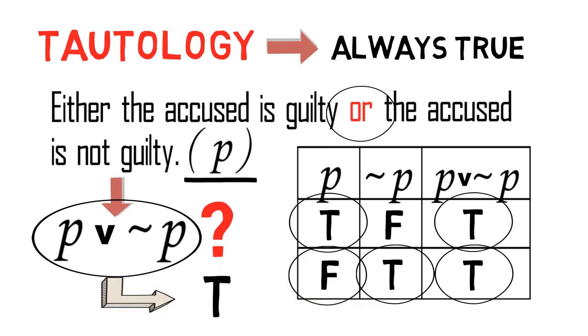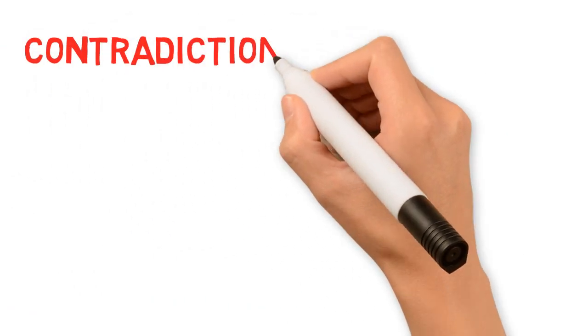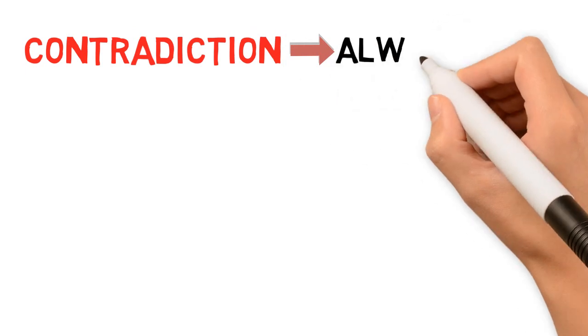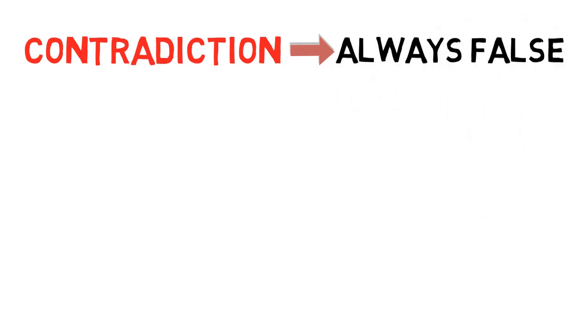On the other hand, a contradiction is defined as a propositional formula that is always false under any circumstance. In other words, a propositional expression is a contradiction if and only if, for all possible assignments of truth values to its variables, its truth value is always false. Thus a contradiction is a proposition that is always false.